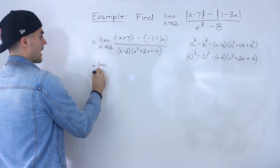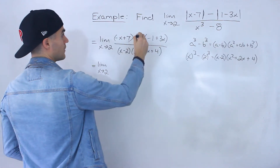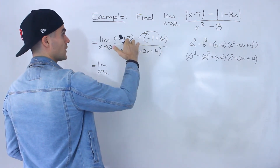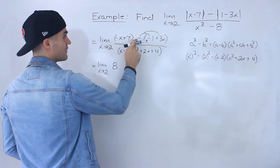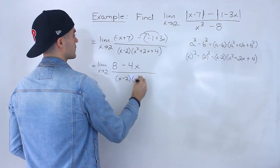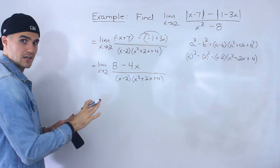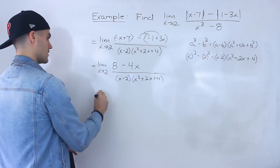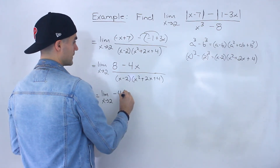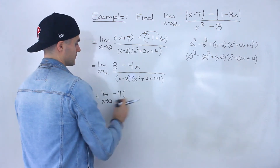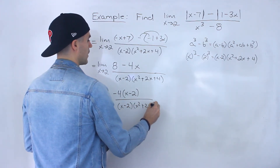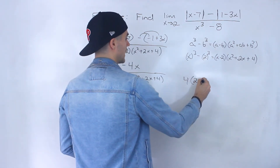Now let's simplify what we have. In the numerator we have negative x plus 7, and then distributing the negative into the bracket gives negative times negative 1 which is positive 1, and negative times positive 3x which is negative 3x. So we get 7 plus 1 equals 8, and negative x minus 3x equals minus 4x — giving 8 minus 4x in the numerator, all over x minus 2 times x squared plus 2x plus 4. In the numerator we can factor out negative 4, which gives negative 4 times the quantity x minus 2.